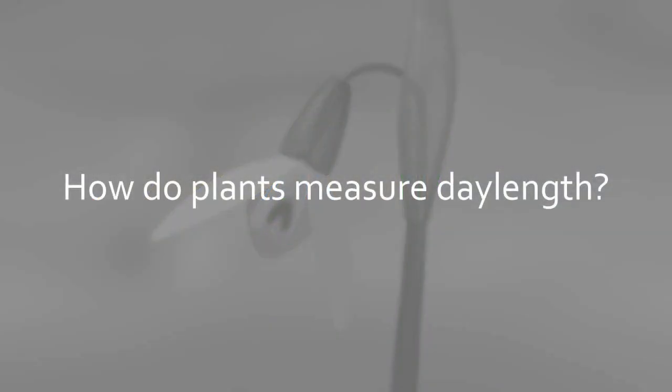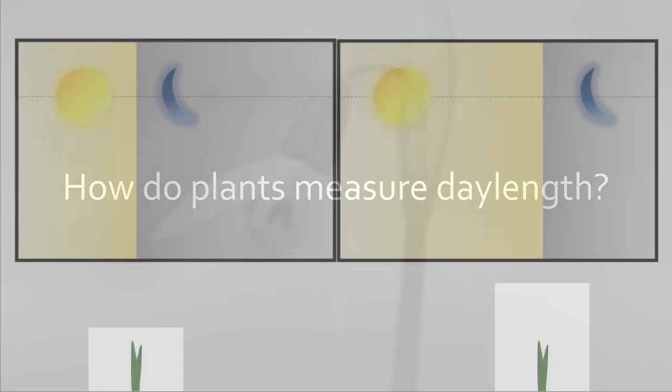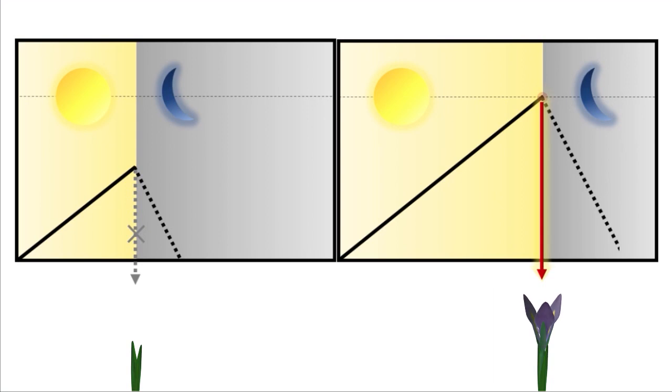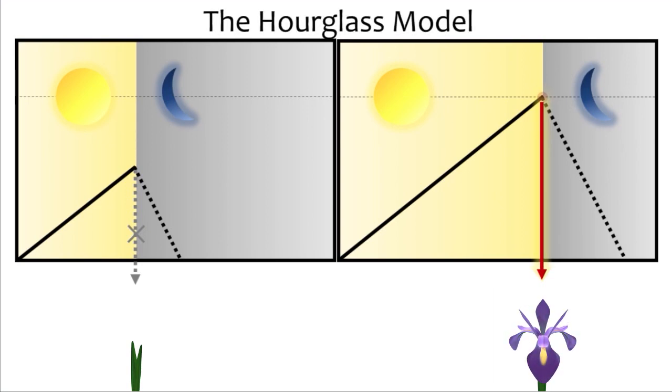You might be wondering how plants can measure day length. Here's some background. For decades, researchers thought that a certain amount of light was necessary to trigger flowering in long day plants. The idea was that a molecule would gradually accumulate during the day and be degraded during the night. Under long day conditions, that molecule would therefore be able to reach a critical threshold above which flowering would be triggered. This model, called the hourglass model, could also work for short day plants.